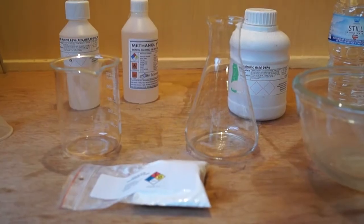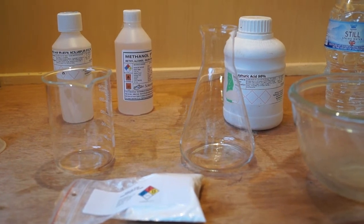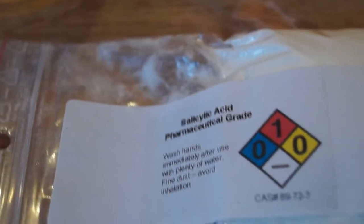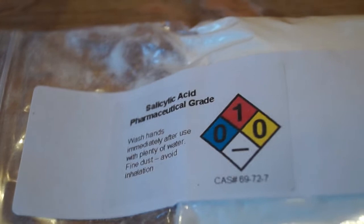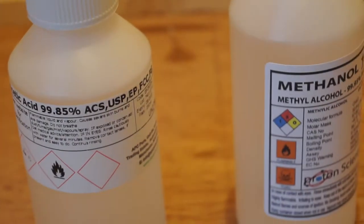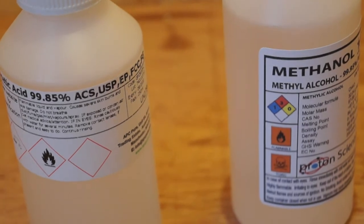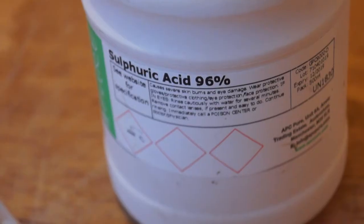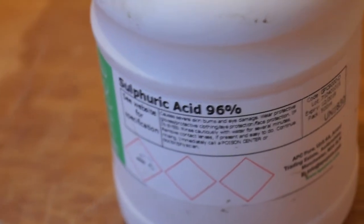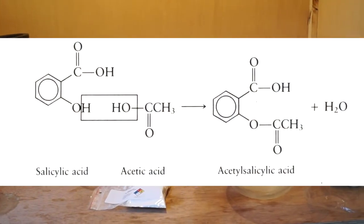Hello, and in today's video I will show you how to synthesise aspirin using salicylic acid and acetic acid. The reaction I am using is an esterification reaction. Usually you would react salicylic acid with acetic anhydride for a reaction giving a high yield, but due to the fact that I couldn't get my hands on any acetic anhydride, I settled for using acetic acid.